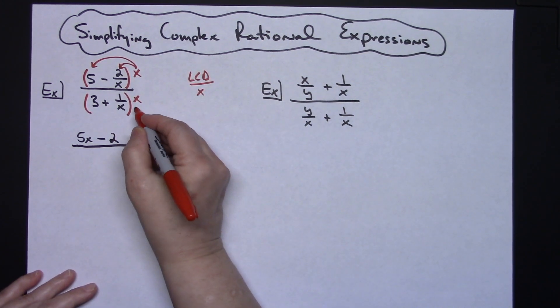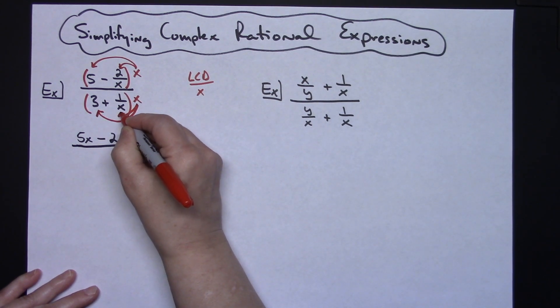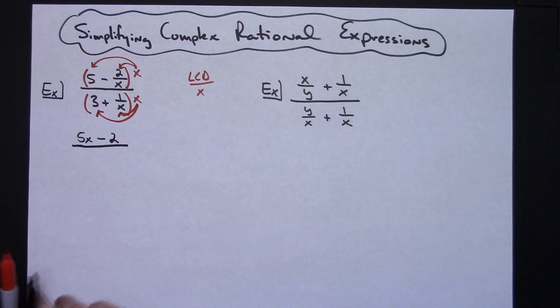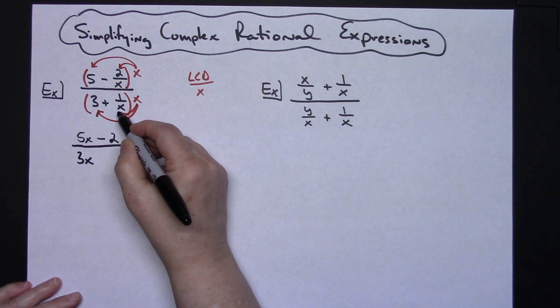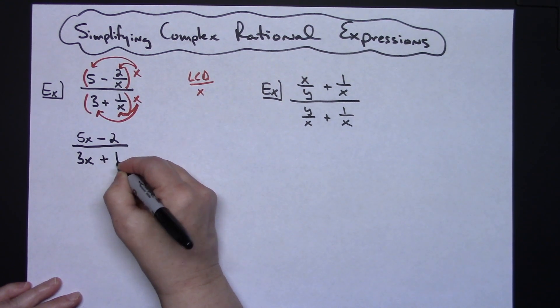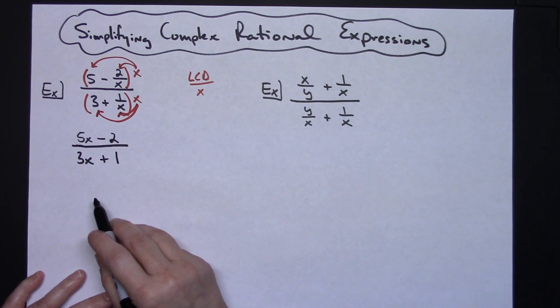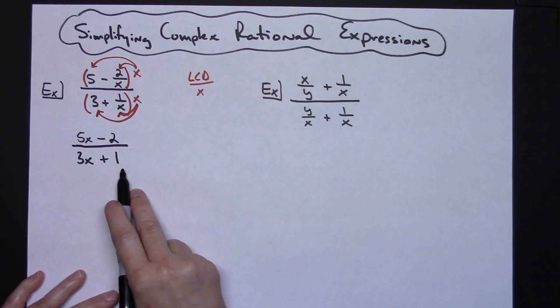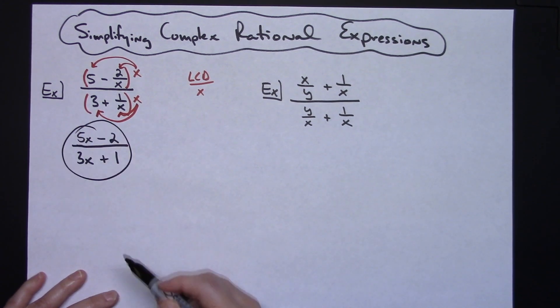We're going to do the exact same thing on the bottom. I'm going to take this x and distribute it to both locations. So 3 times that x is going to give me a 3x. And then x times 1 over x, this x and this x is going to cross out, leaving me with just 1, so plus 1. This cannot be factored any farther because I can't factor anything out of the top, I can't factor anything out of the bottom, so nothing else can cross out on that one.